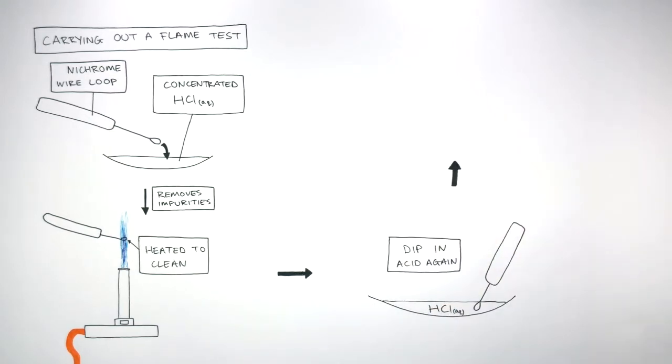Then the nichrome wire loop is dipped in the metal compound being tested, where the nichrome wire loop is then placed inside the hot blue flame and someone uses their eyes to judge the colour change to identify which metal compound has been tested.